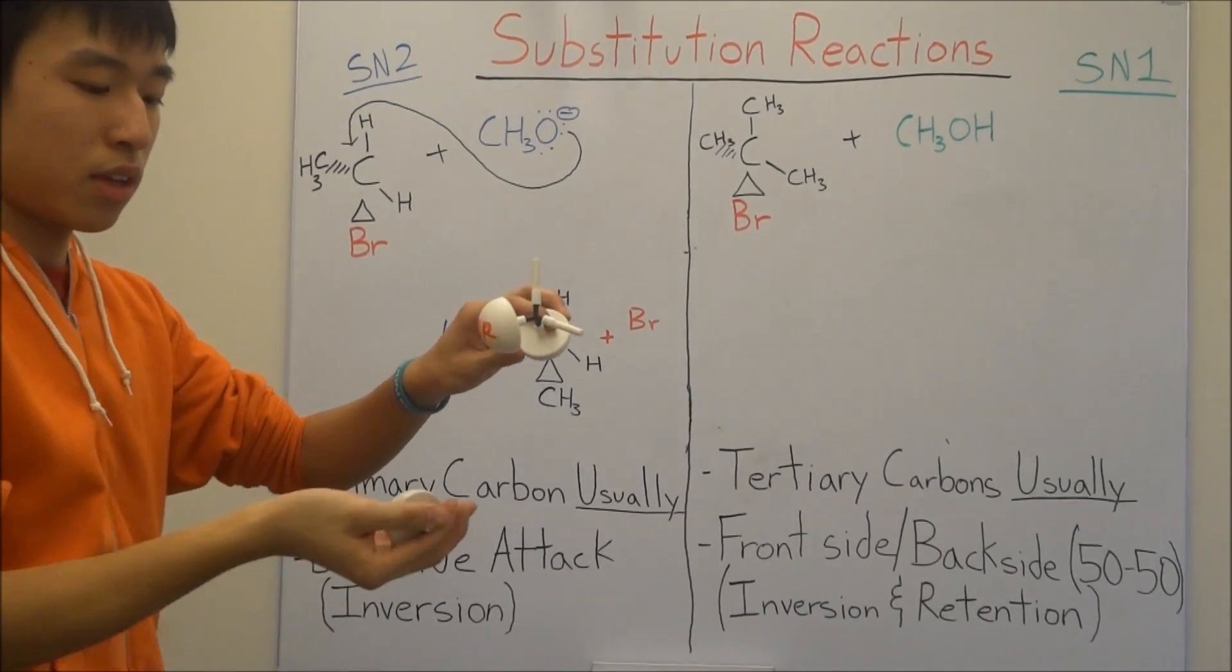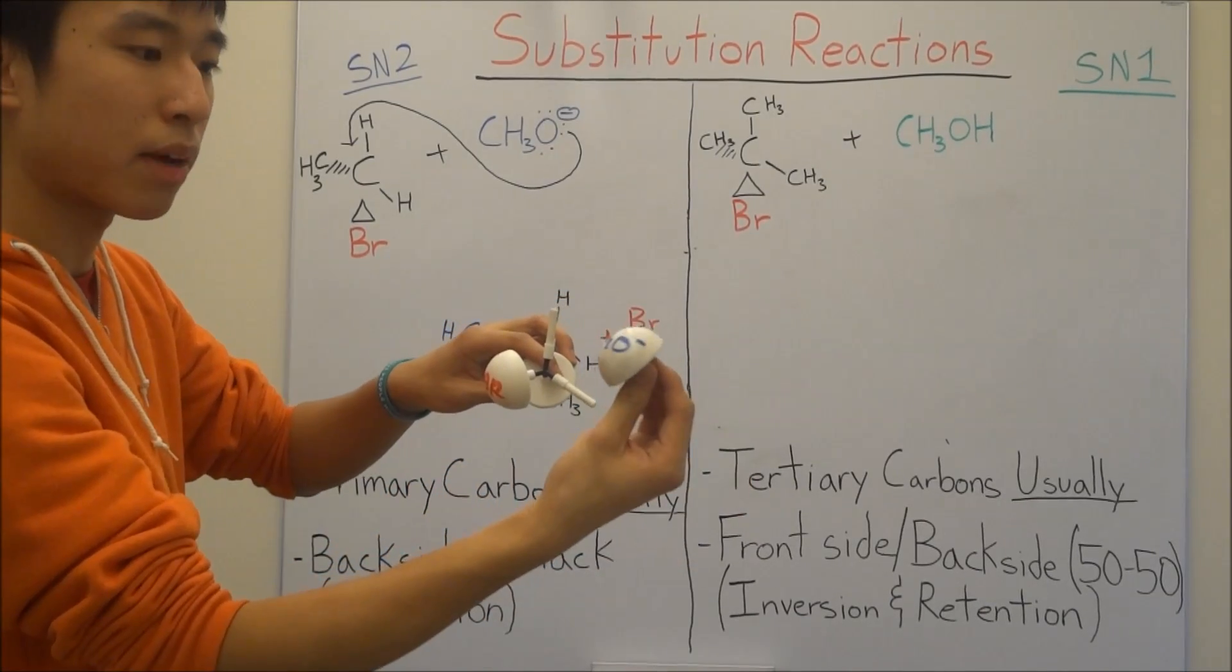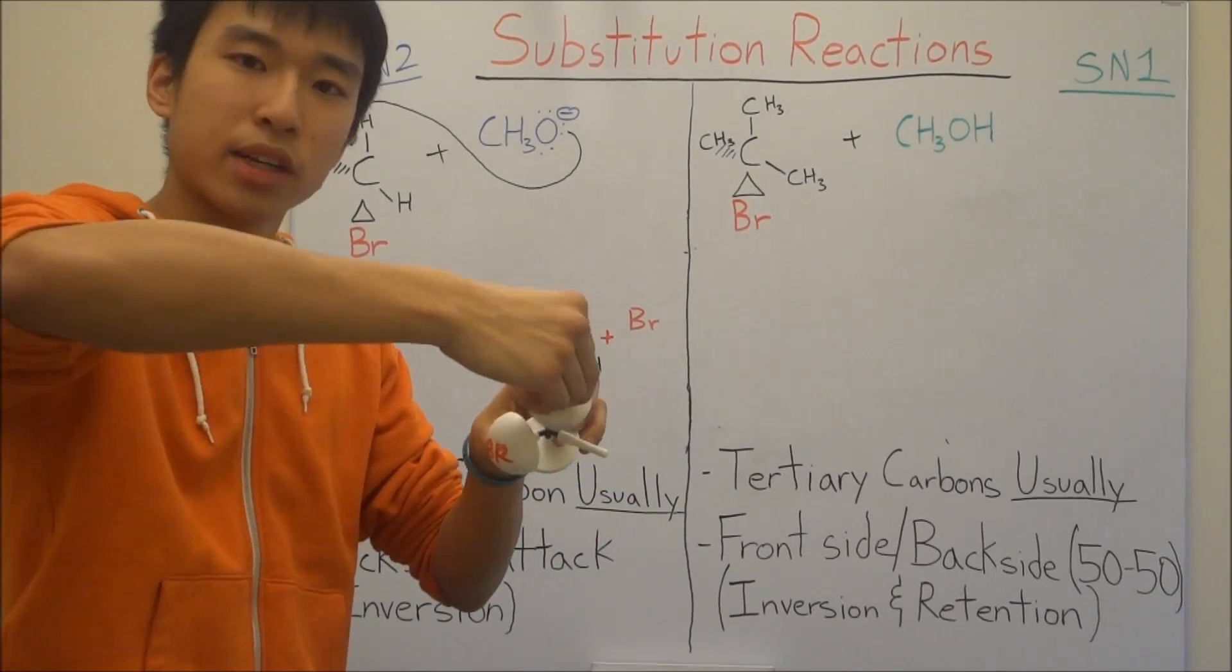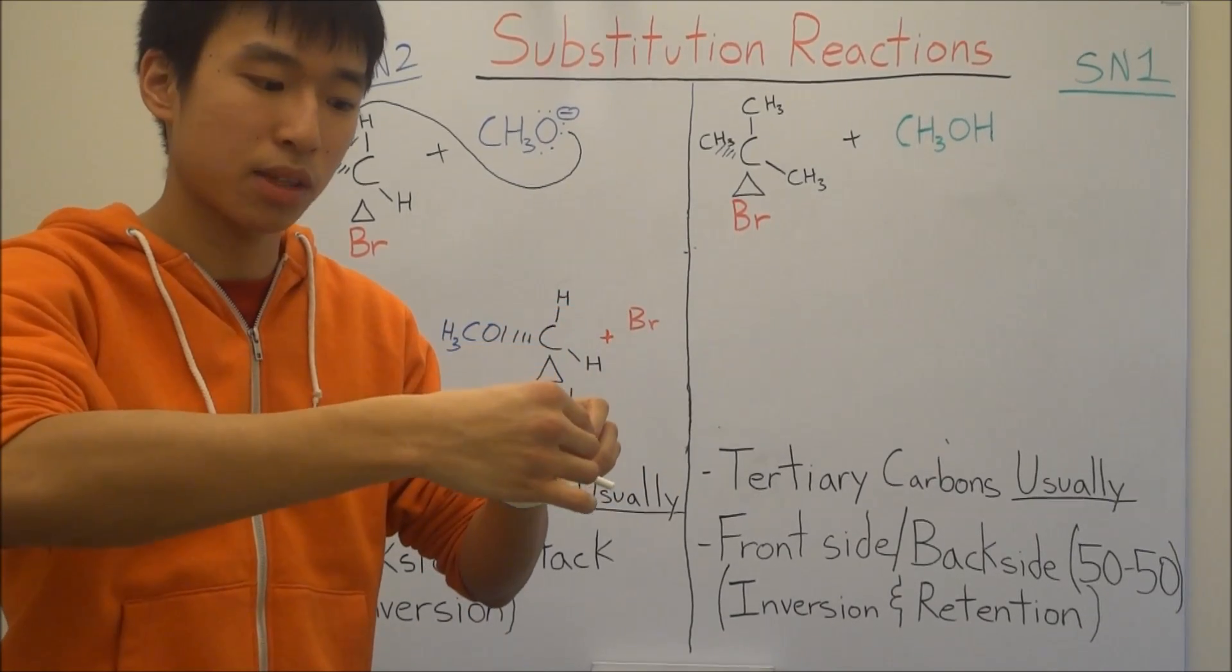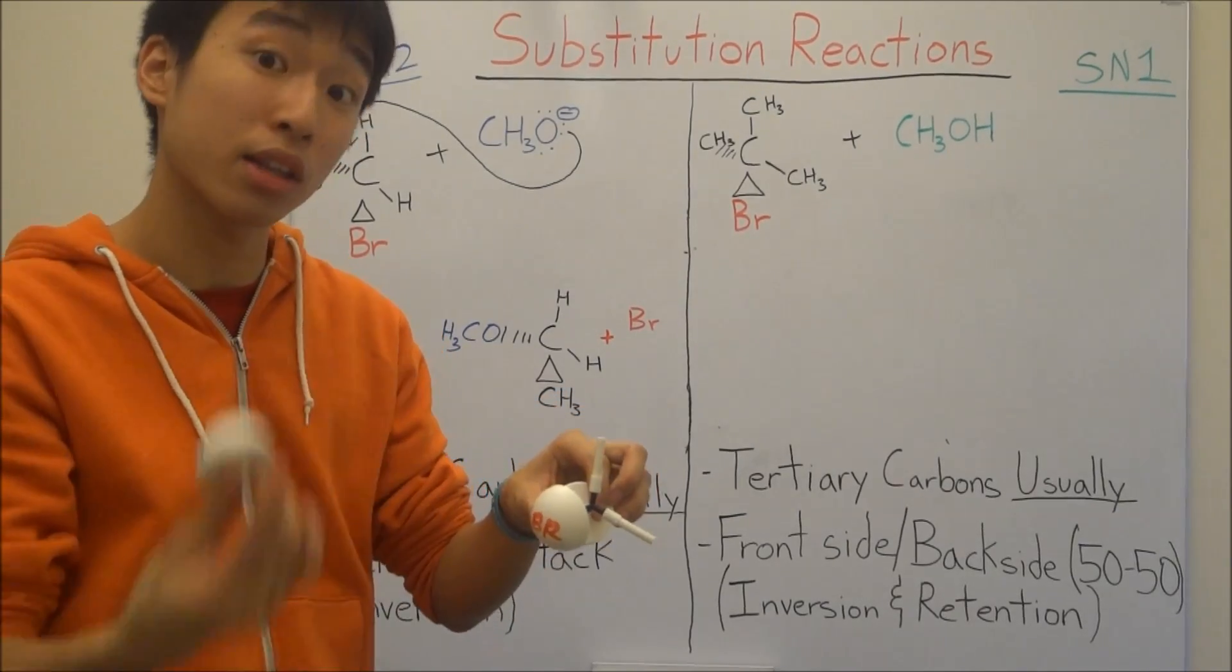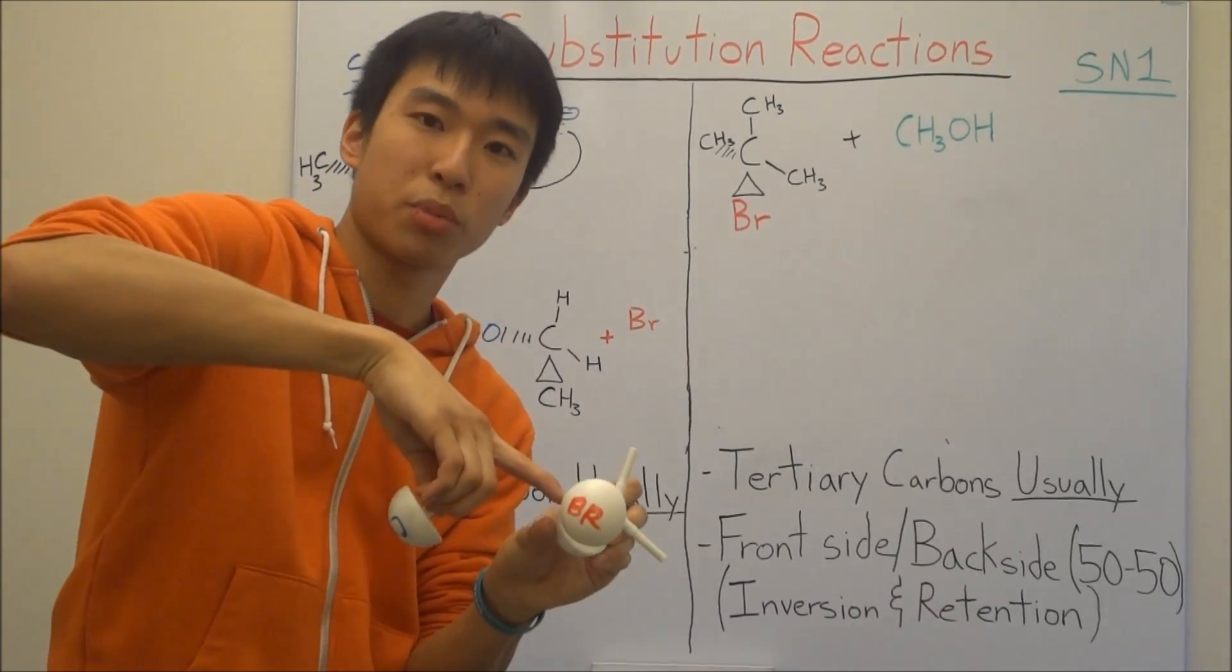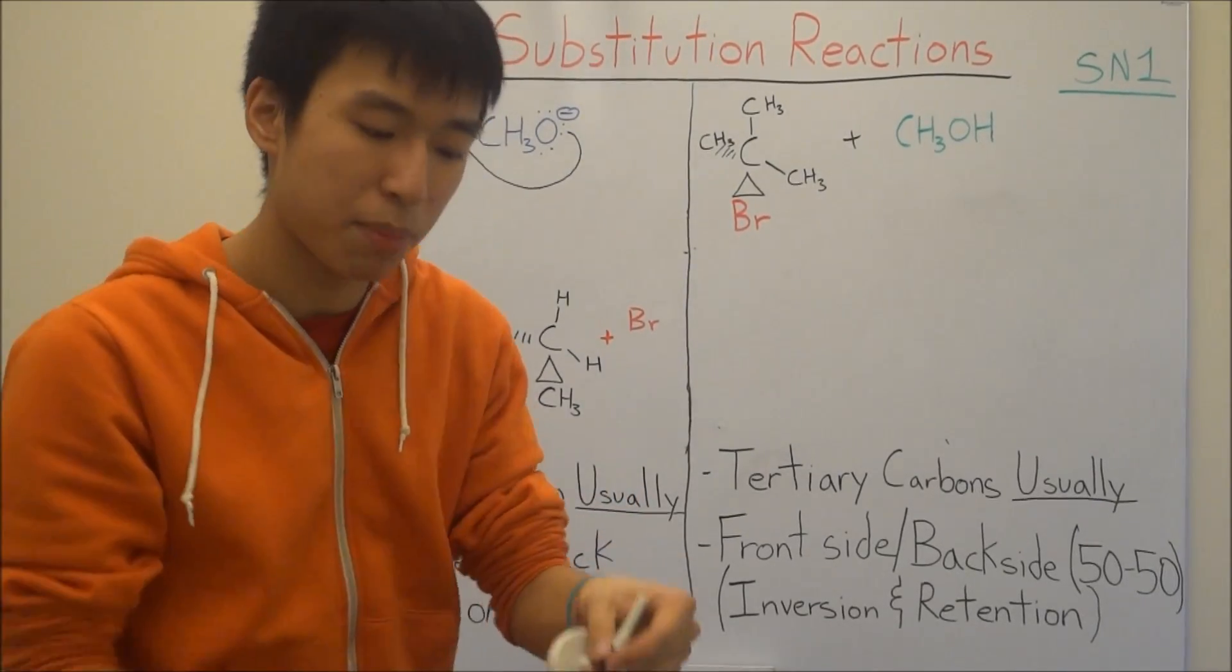And then your CH3O minus, methoxide - he's pretty big of a molecule but he's not considered super hindered. Your methoxide, if it attacks in the front, it's going to clash with this bromine group that's trying to leave. So if he's trying to come in here and substitute in and he clashes with the bromine, it's going to make the bromine not leave. So what you want to do is actually have your methoxide come in from the back, opposite the bromine. This way the bromine gets kicked out.